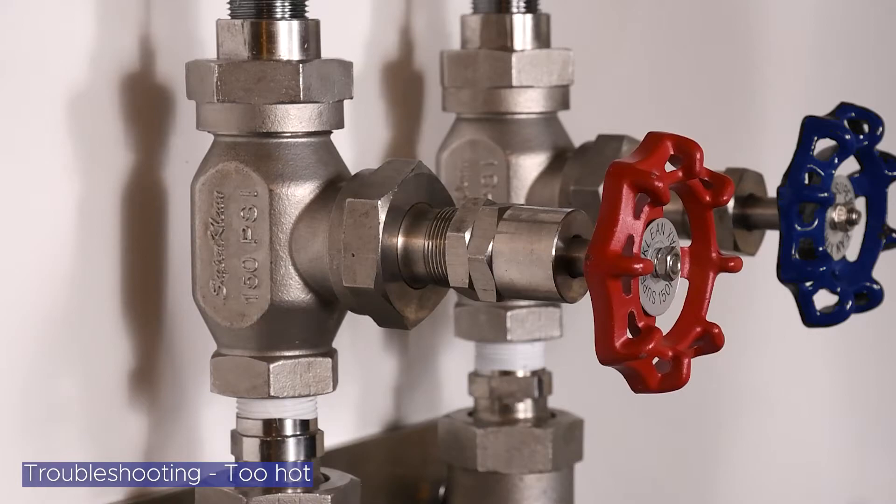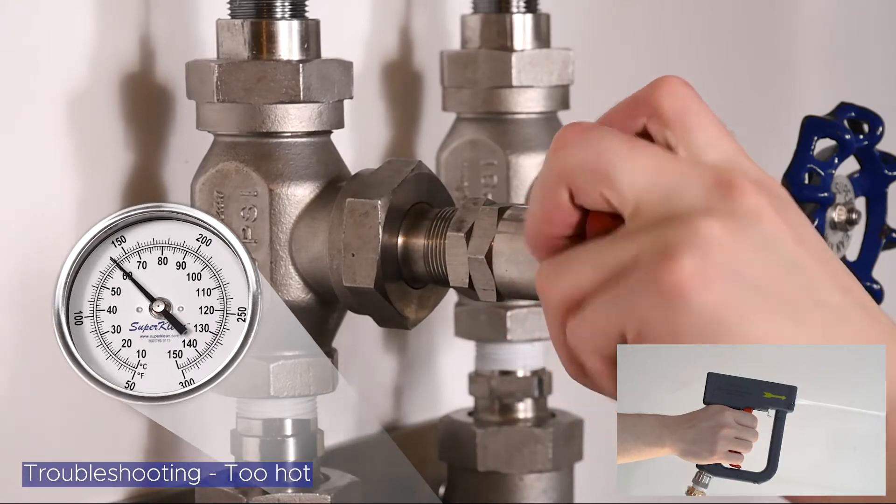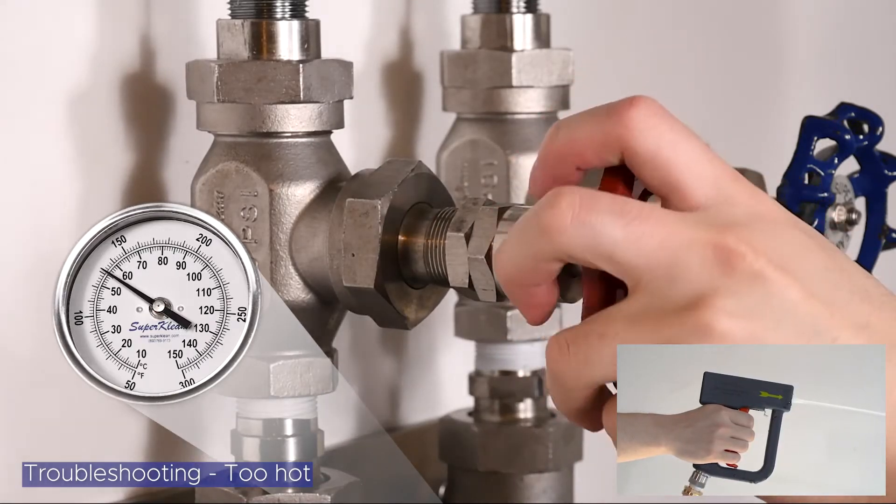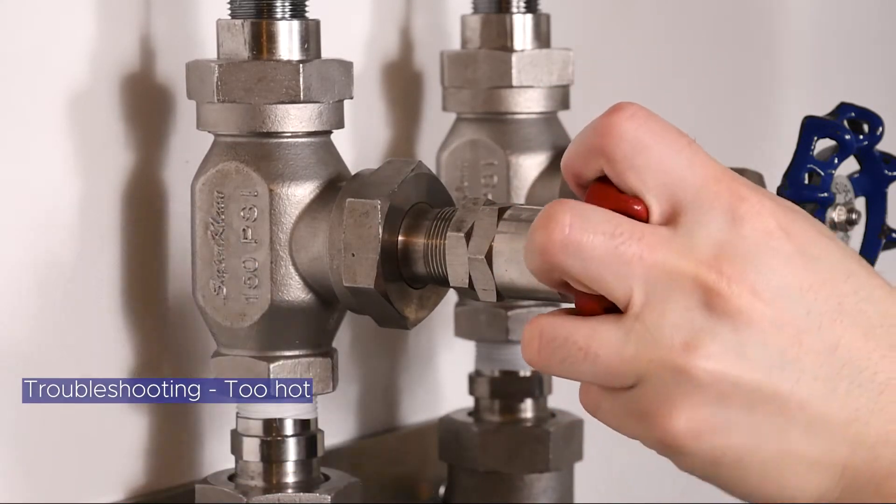If the water temperature output is still too hot after fully turning the temperature adjustment hand wheel counterclockwise, begin to decrease the steam flow by closing the steam globe valve by slowly turning clockwise while spraying the nozzle. Once the desired temperature is achieved,